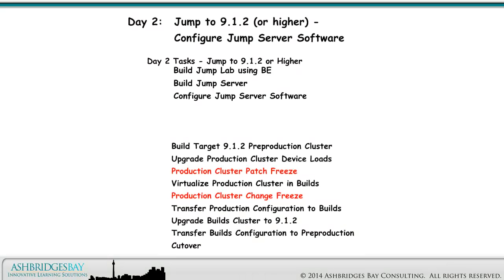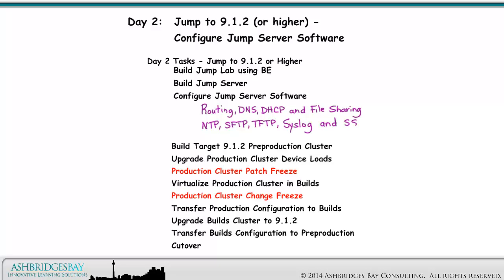Here are the individual tasks. Configure Windows software: routing, DNS, DHCP, and file sharing. And configure other software: NTP, SFTP, TFTP, Syslog, and SSH.